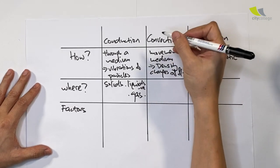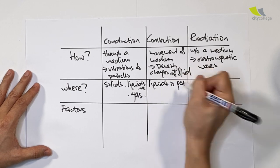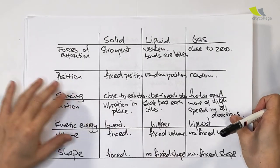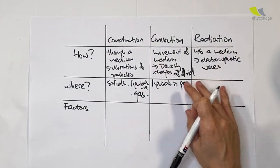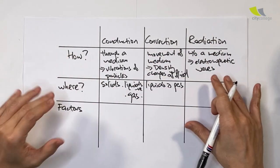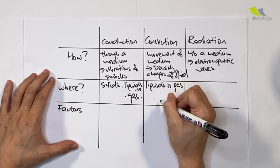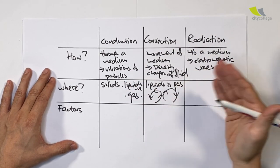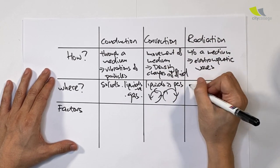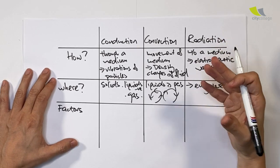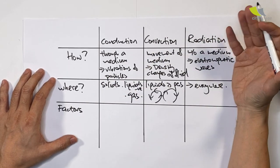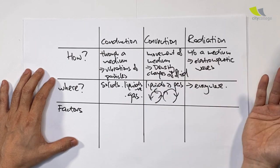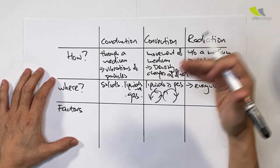Convection can only take place in liquids and gas. It cannot take place in solids because the particles are locked in a fixed position and can't move. For liquids and gas, the particles are freer to move around, so convection can take place, always moving in a circular upward pattern. Radiation happens everywhere — as long as there's a heat source, radiation can happen. That explains why heat energy can reach the Earth from the Sun even through the vacuum of space, where neither conduction nor convection can occur.